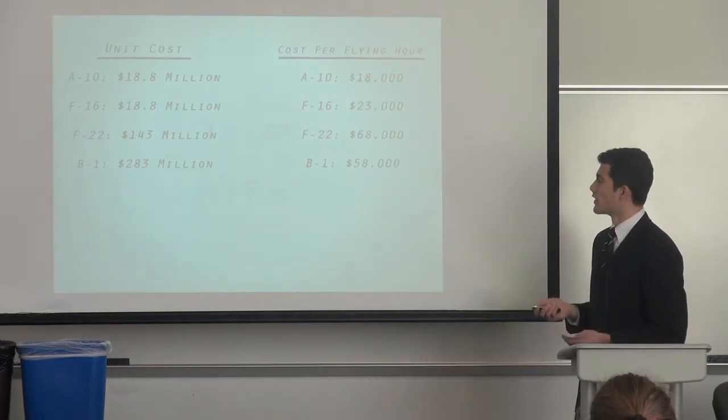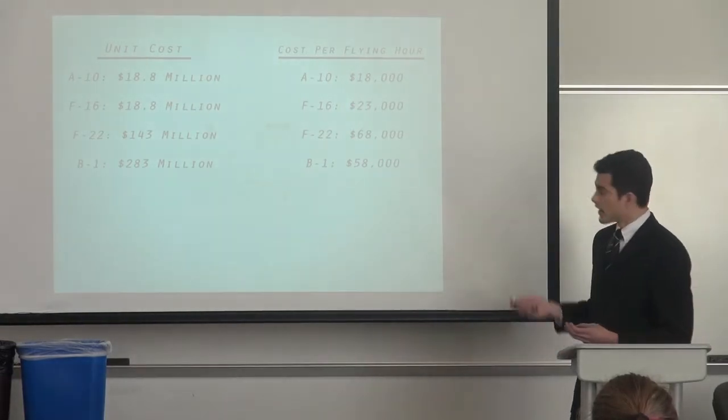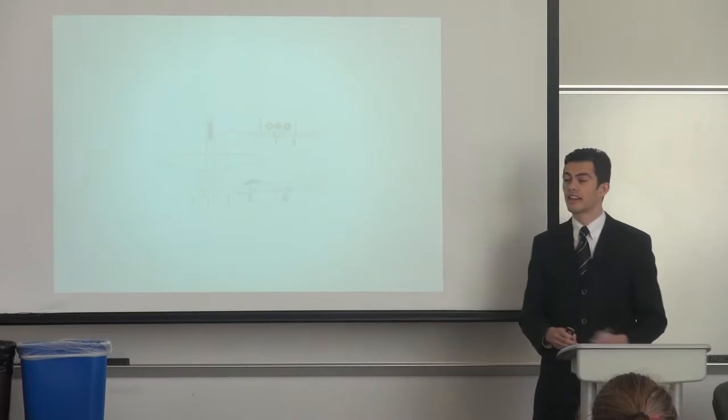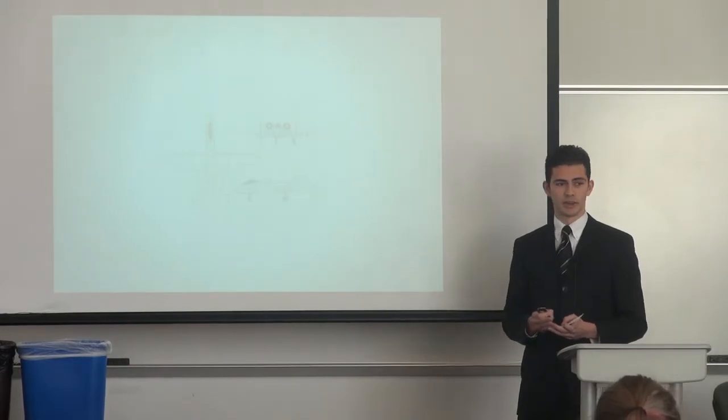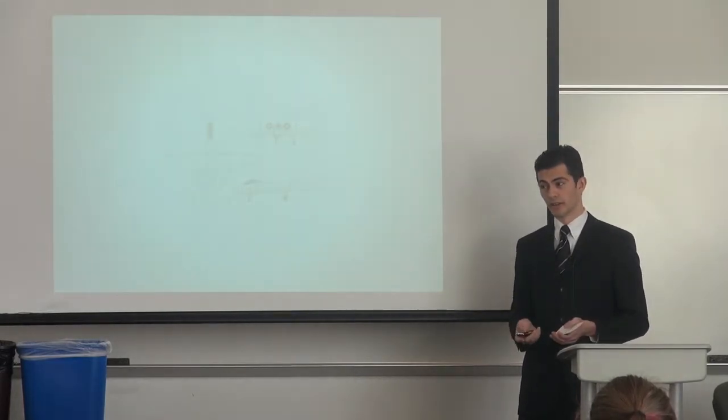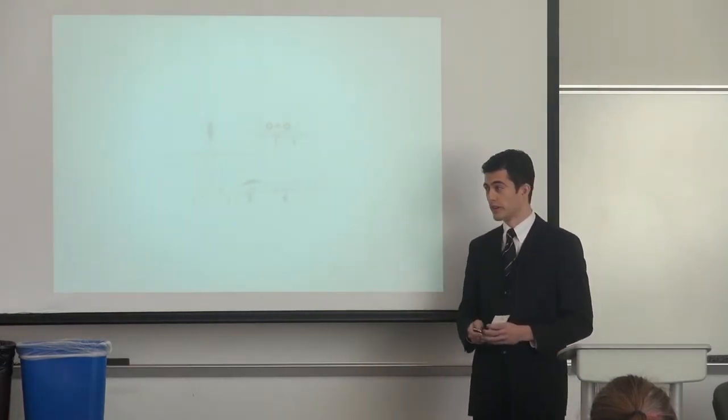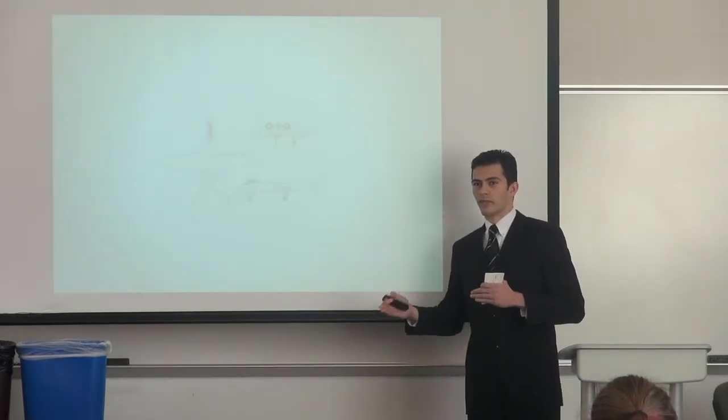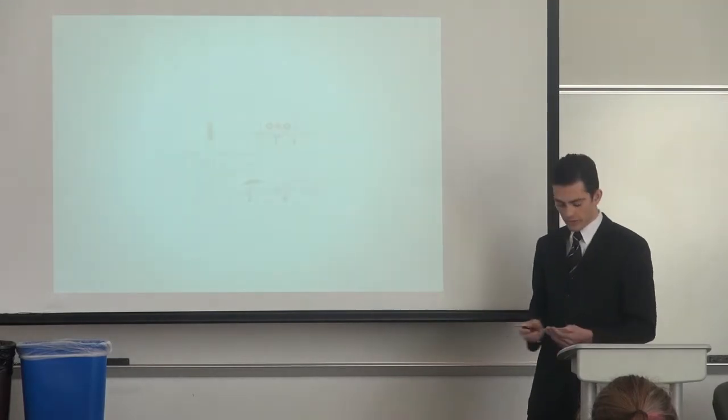Now, you'll notice that the F-35 is missing from both of these lists. And that is because after over nine years of development, it is still in development. It has been pushed back again and again, and it continues to fail performance issues and things of that matter. But here's the real kick: The F-35 project has cost the United States taxpayers over $398 billion, and it still does not work. And they're trying to get it into service by 2019 or 2020. But a project that has cost $398 billion and still doesn't work, and they're trying to replace the cheapest aircraft that the Air Force has right now, that argument kind of falls apart when you look at the numbers like that.